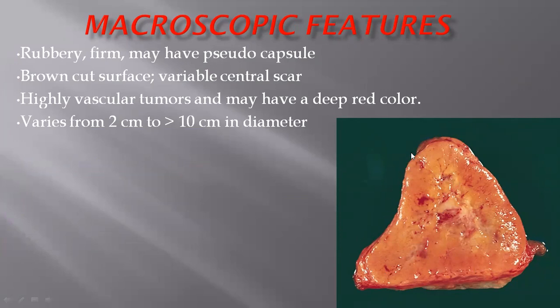In terms of macroscopic features, these tumors are commonly well-circumscribed, rubbery to firm in nature, and commonly have a capsule or pseudo-capsule. On cut surface they appear tan-pink, and these are very hypervascular tumors. Their size ranges from 2 cm up to 10 cm or greater, and when accompanied by an SDH mutation their sizes increase further.